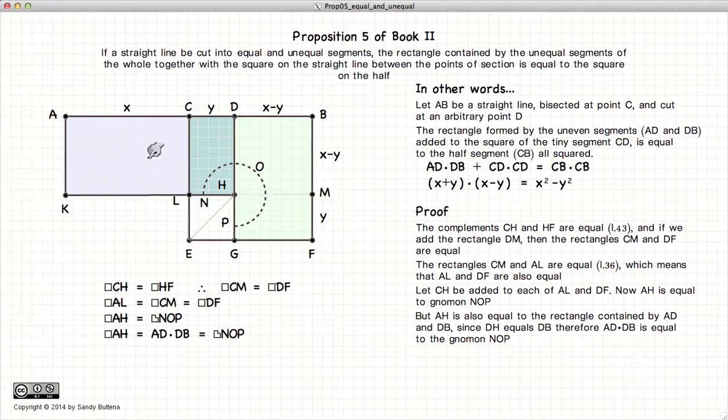But now AH is equal to AD times DB. Since DB and BM are equal, as we mentioned before, BM is equal to DB. So this is equal to DB. And hence AH is equal to AD times DB, which is also equal to NOP.